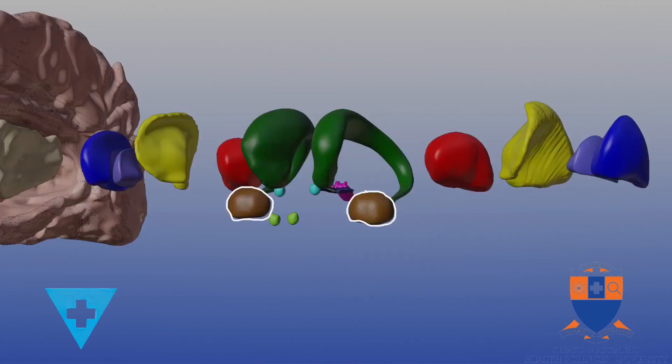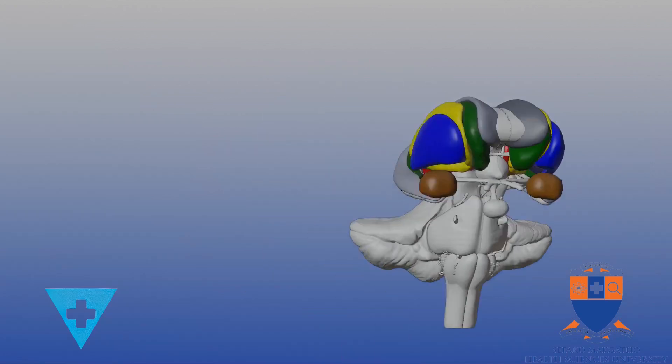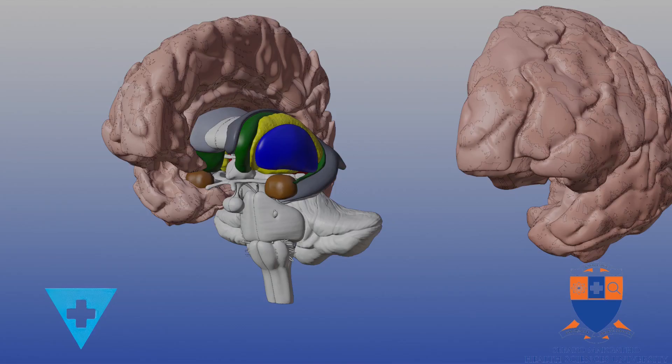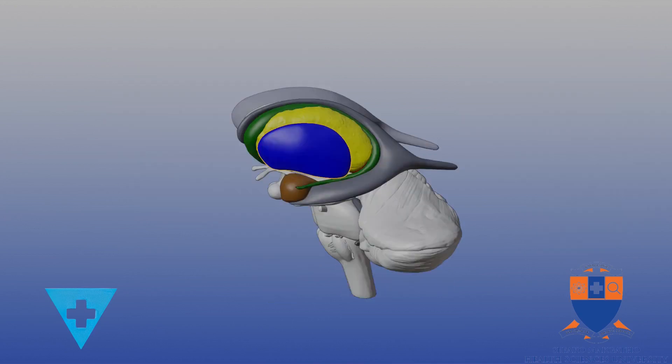Next up is the amygdaloid body. The amygdaloid body, amygdala meaning almond, is located deep to the uncus of the parahippocampal gyrus of the temporal lobe, just anterior superior to the termination of the inferior horn of the lateral ventricle. It lies in close proximity to the tail of the caudate nucleus. The stria terminalis originates in this nucleus and both are part of the limbic system.